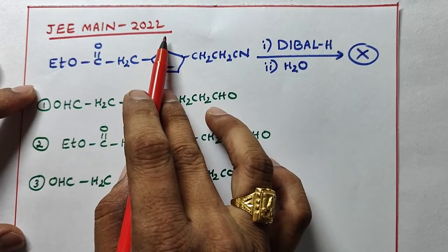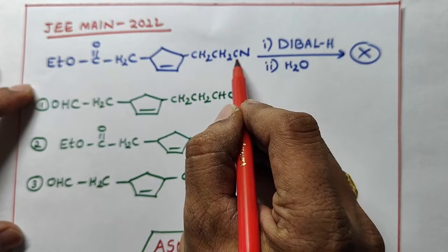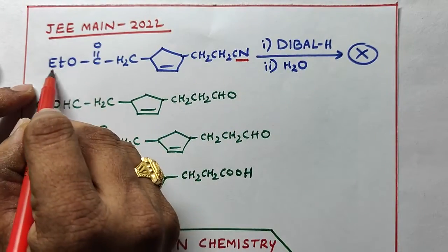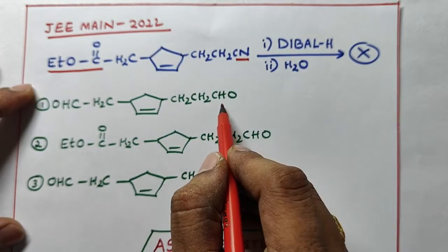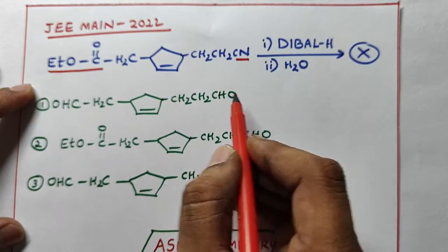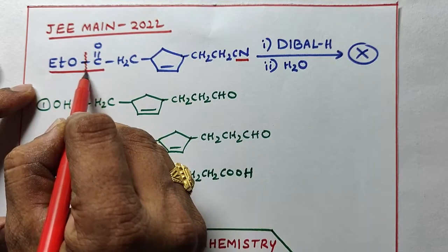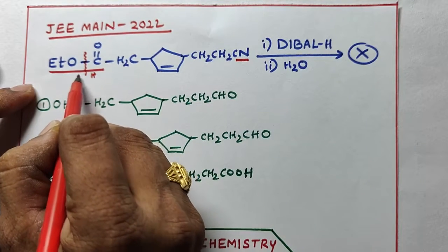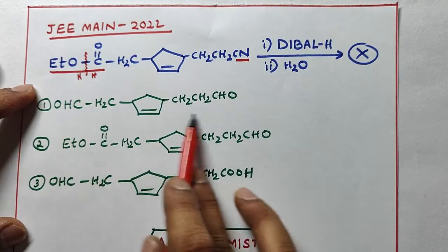Next question, JEE main 2022. So in this compound it has two functional groups: CN and ester functional group. Now here CN is converted into CHO aldehyde group, and here ester functional group, what I told, break this bond. Here one hydrogen, here one hydrogen you can write it, right CHO.